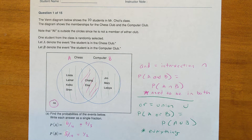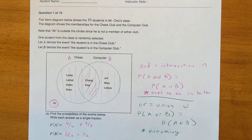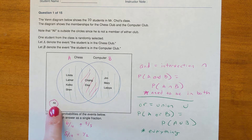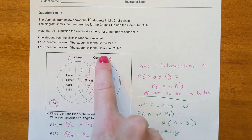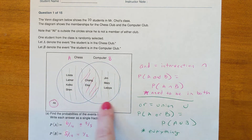This lesson discusses the probability of the union of two events. Problem one: the Venn diagram shows the ten students in Mr. To's class, with memberships for the chess club and the computer club. Note that Allie is outside the circles since he is not a member of either club — he's not in the chess club and he's not in the computer club.